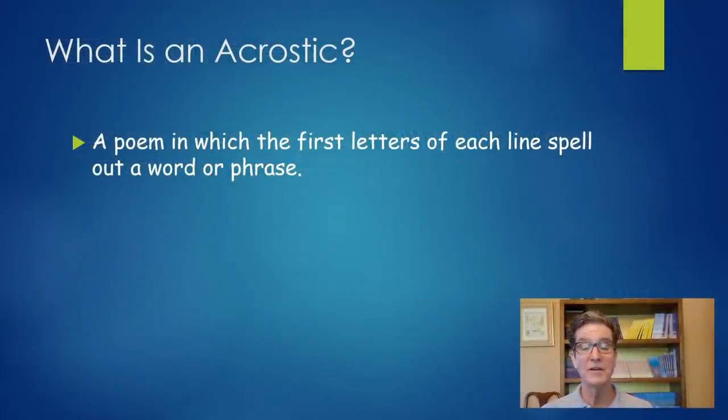So first let's talk about what an acrostic is. An acrostic is a form of poem, and by the way form is just a word that poets use to mean a type or a kind or a style of poem. Form means a set of rules for how you write that particular poem.